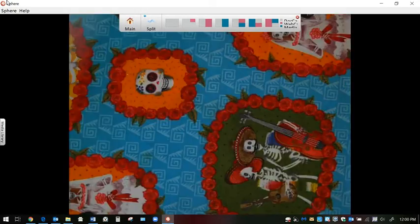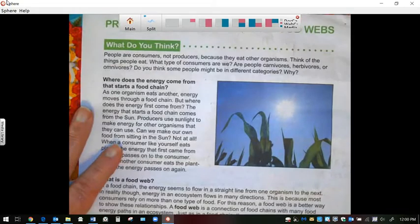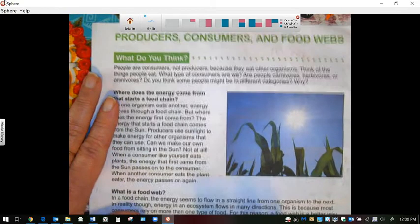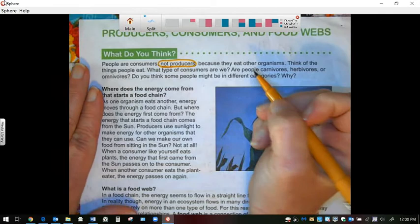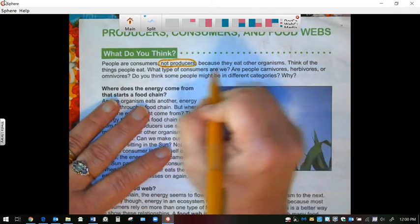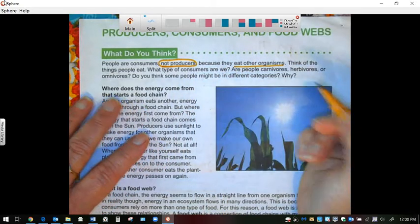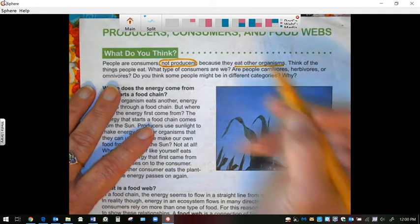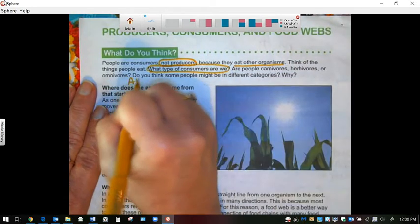So let's look at the next page. People are not producers because we cannot make our own food. And I'm not talking about cooking at home. I'm talking about like plants. Because they eat other organisms. Think of things people eat. What type of consumers are we?